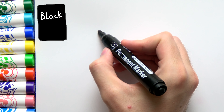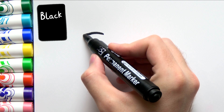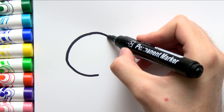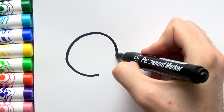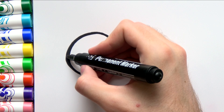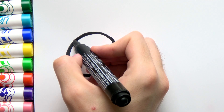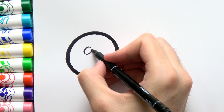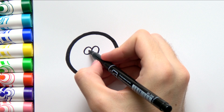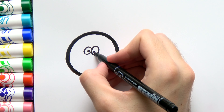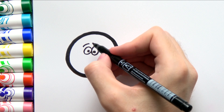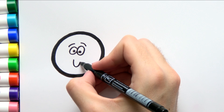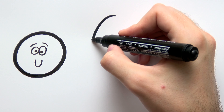Black first, let's draw a circle. Let's draw an oval.